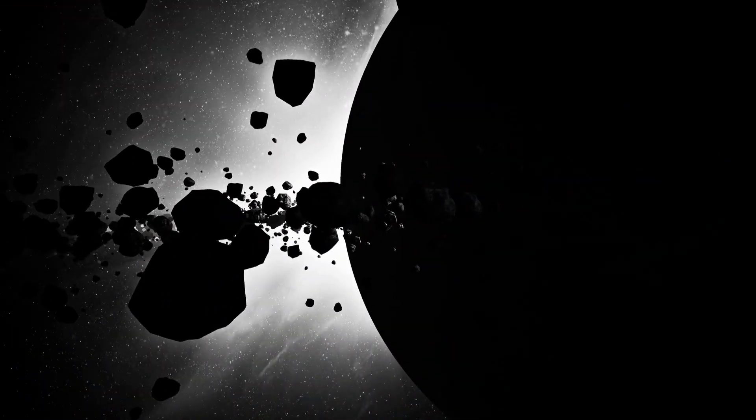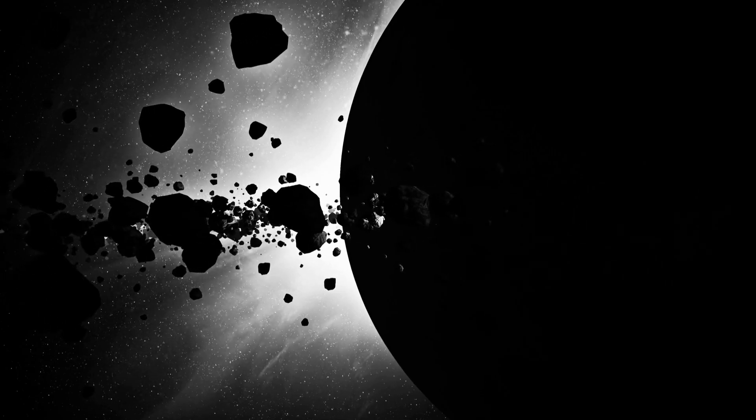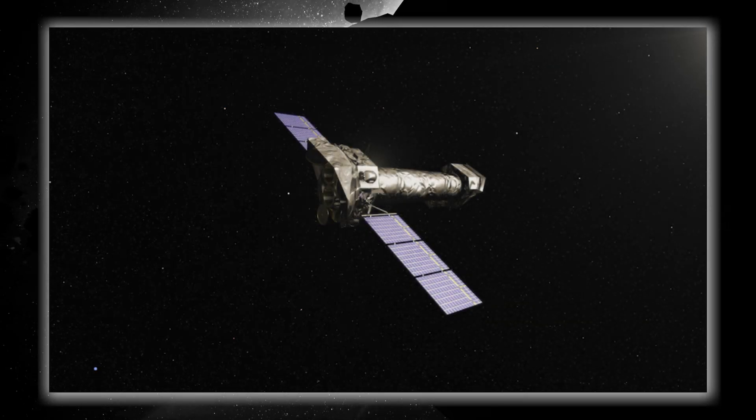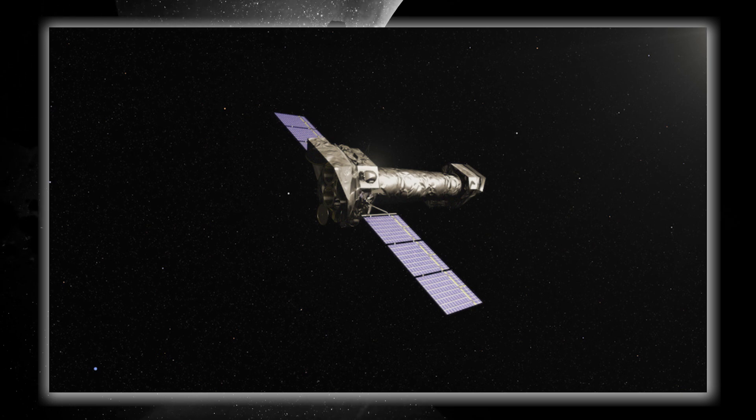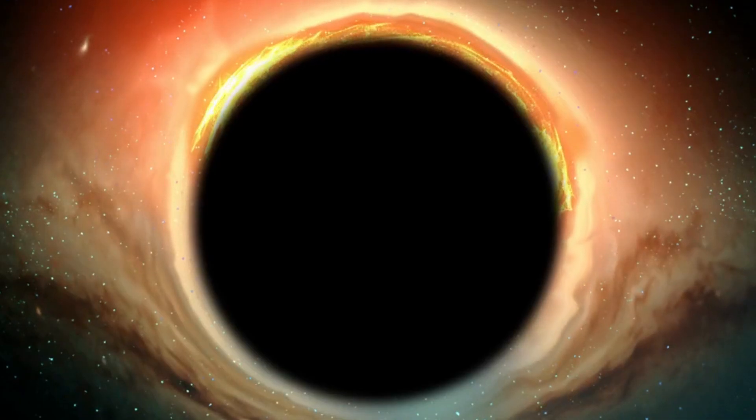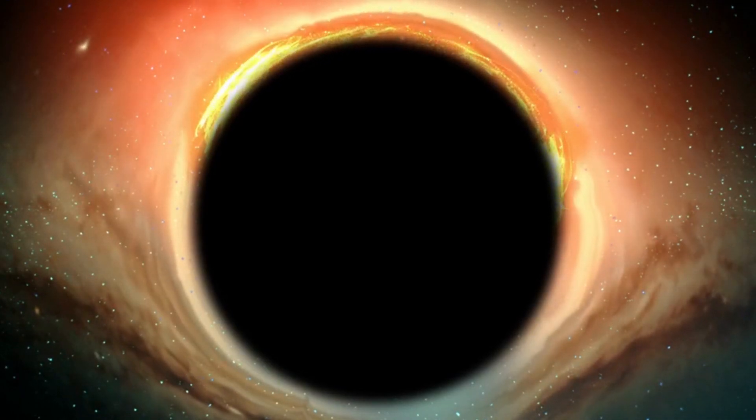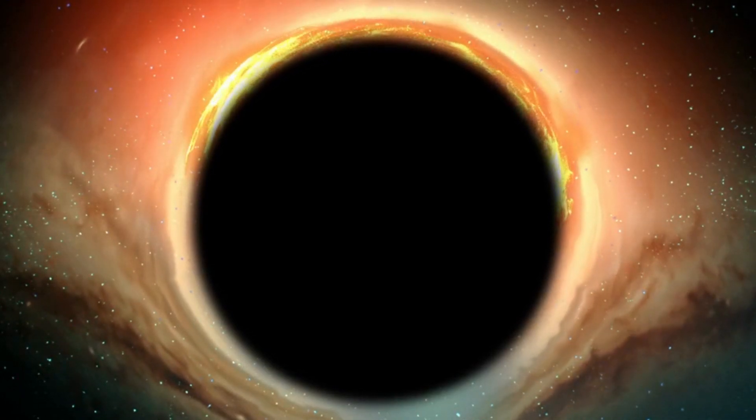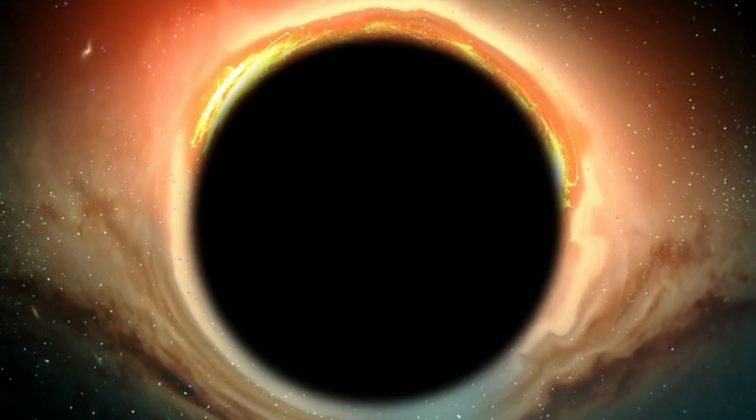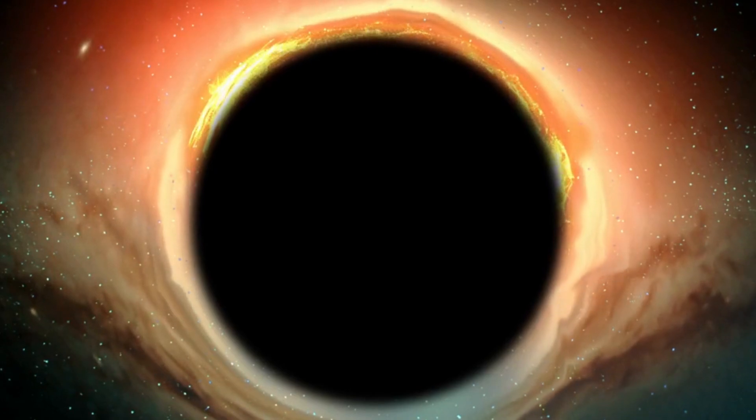But how did this revolutionary discovery come about? The story centers on two impressive space telescopes, the XMM-Newton, operated by the European Space Agency, the James Webb Telescope, and NuSTAR, operated by NASA. These telescopes were focused on a supermassive black hole and witnessed quite a show over several days. They observed fascinating X-ray flares emitted by the scorching hot corona surrounding the black hole.